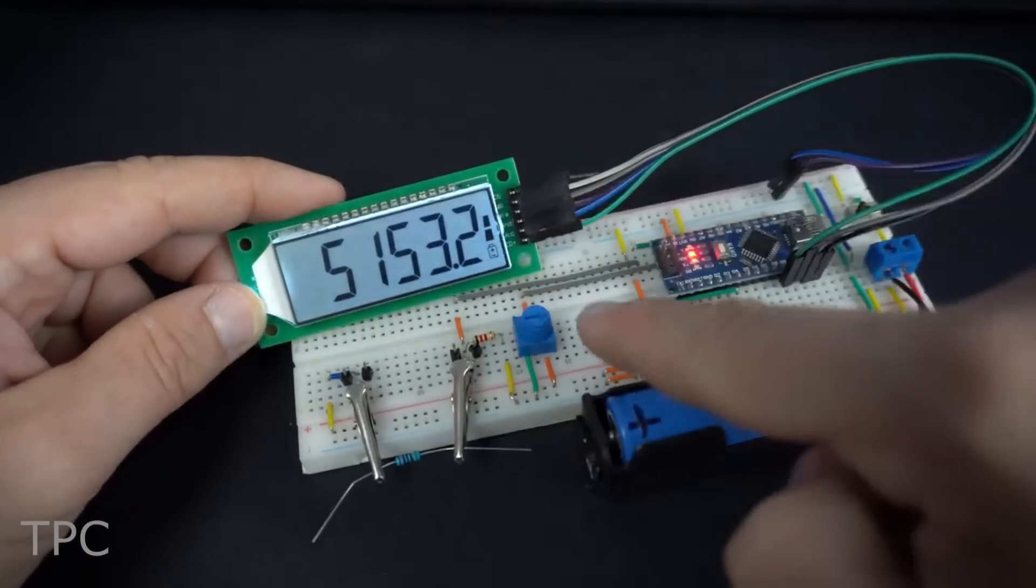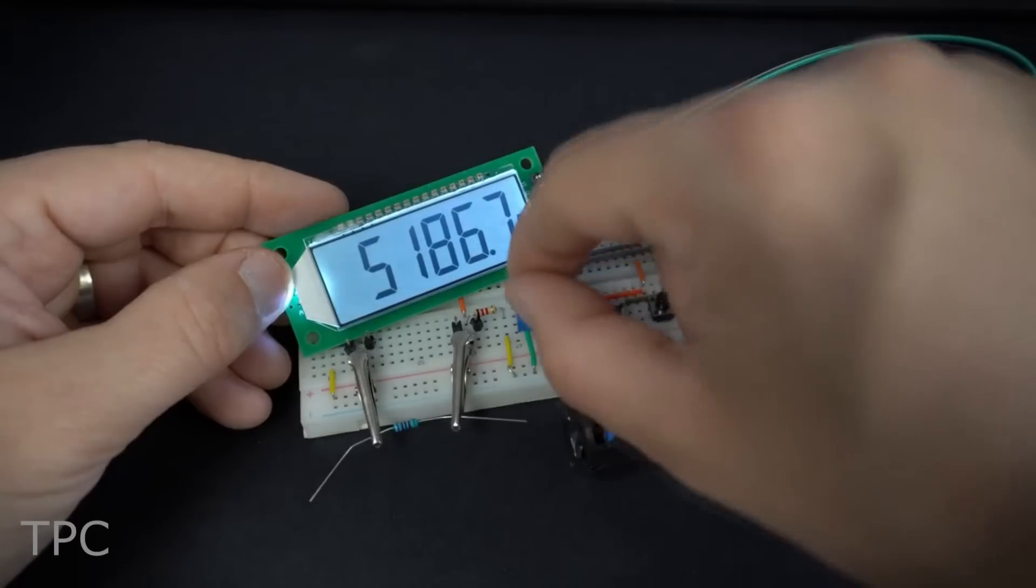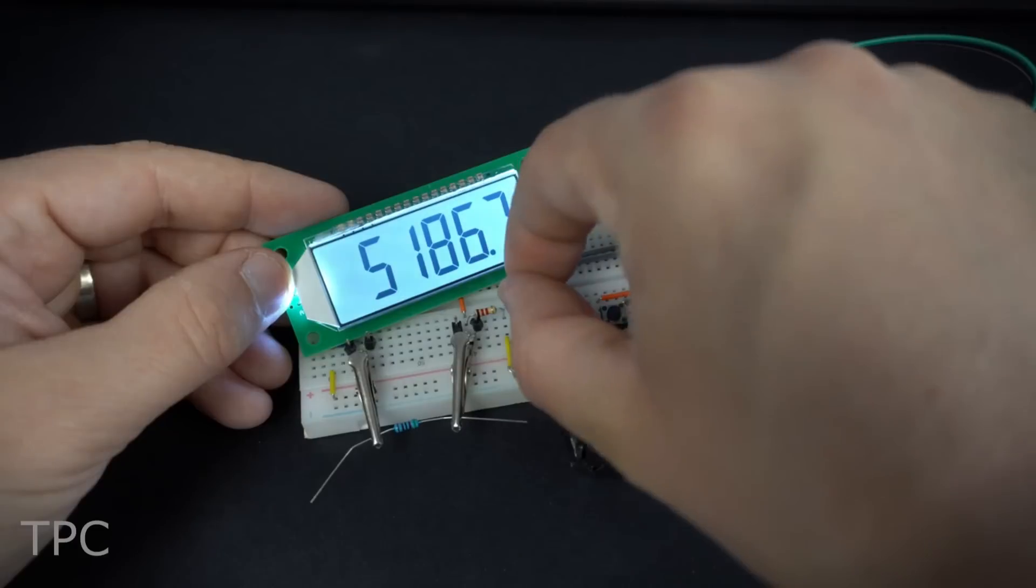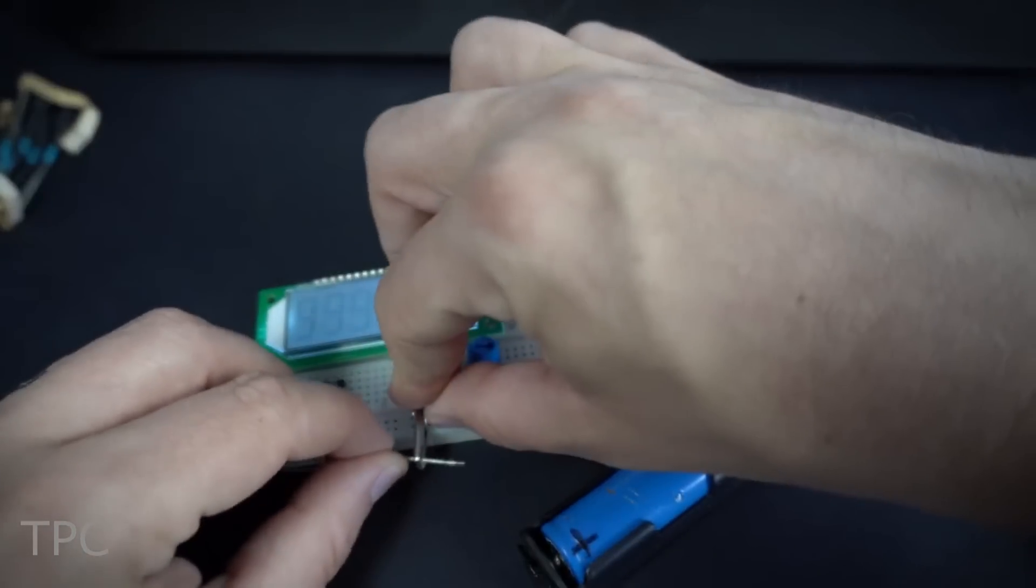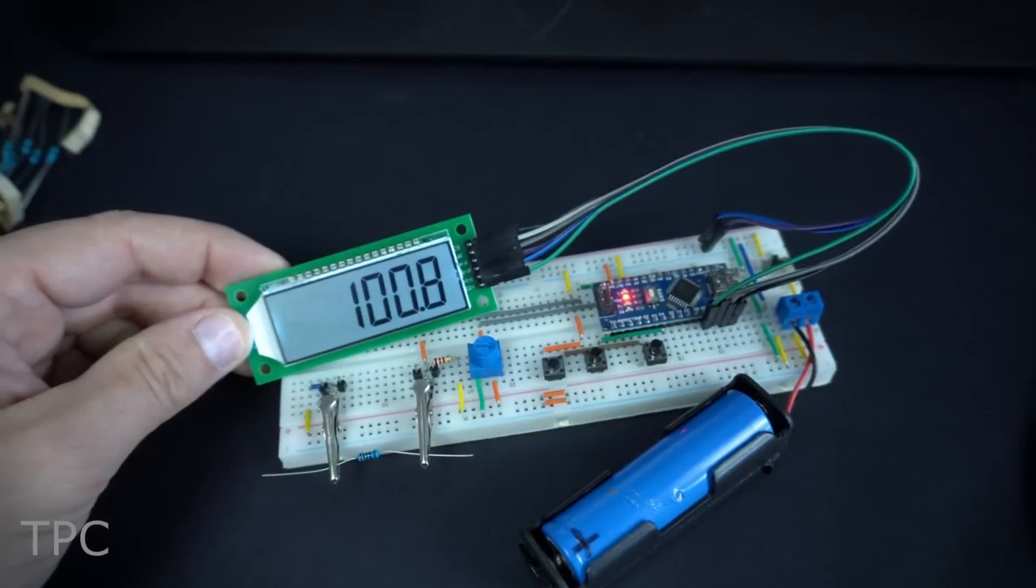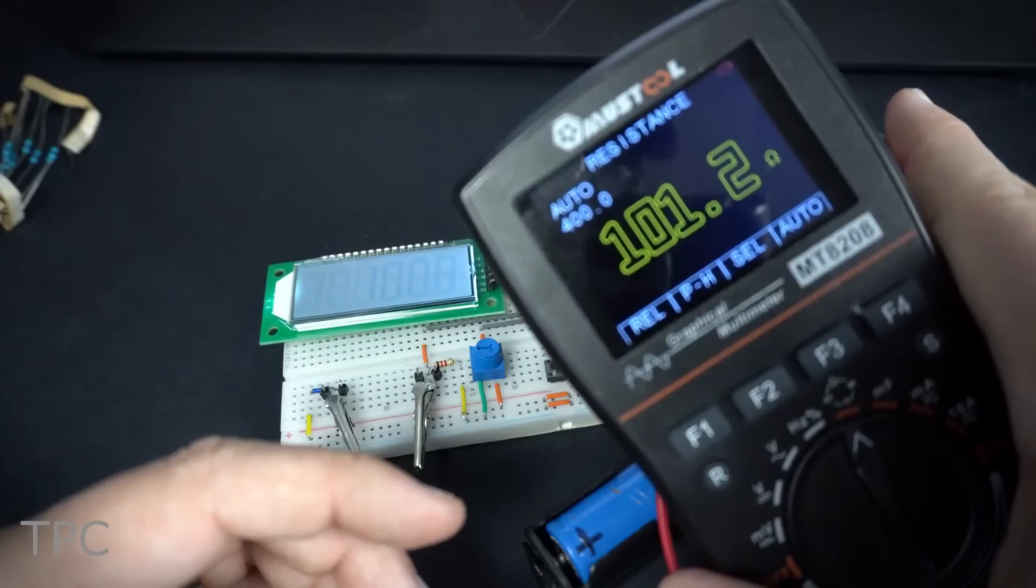On the side, you can see the battery level indication. The screen brightness can be adjusted using a potentiometer. This is achieved using pulse width modulation. The meter is pretty accurate and uses simple mathematics to calculate the unknown resistance value.